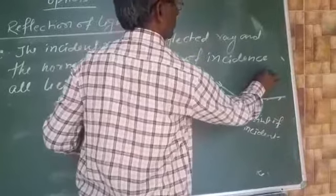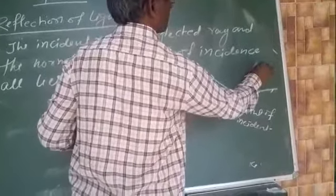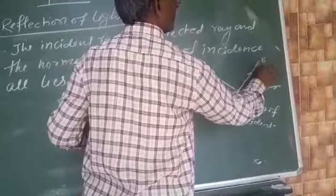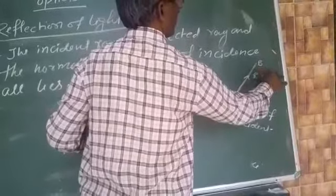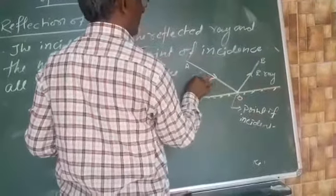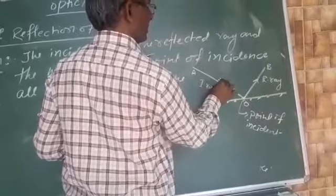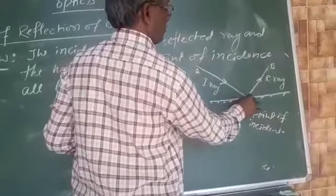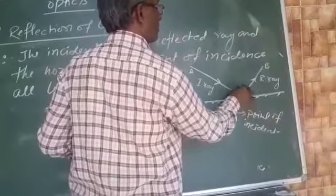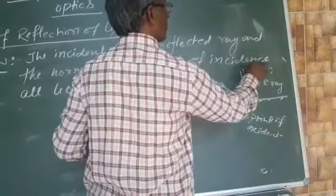And this ray reflects back from the surface. This is the I ray, the I ray means incident ray. And a perpendicular drawn from the point of incidence, that is normal.